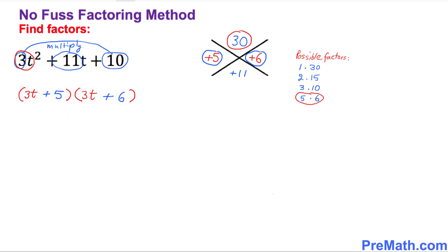Now look at the first parentheses, there's nothing in common, just leave it alone. In the second parentheses, as you can see, 3 and 6 are both divisible by 3. Go ahead and divide them out by 3. Once you do that, this 3 cancels out, you got t plus 2, and also write down this 3t plus 5 as well.